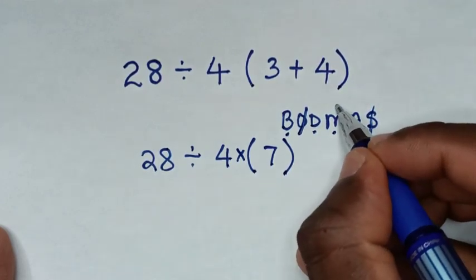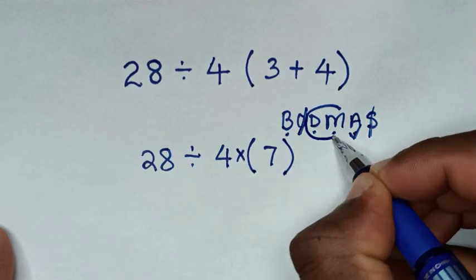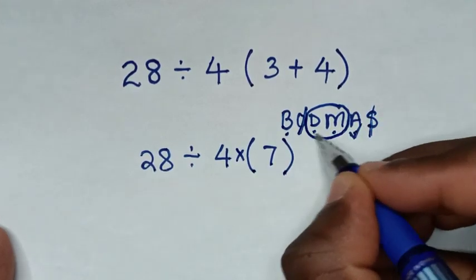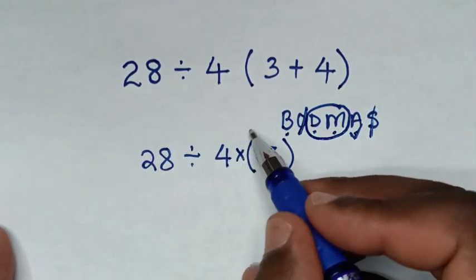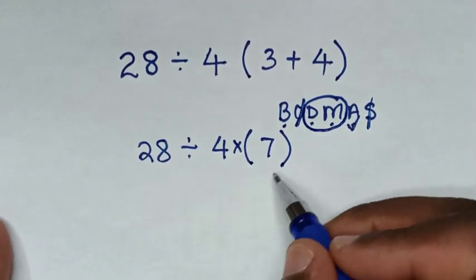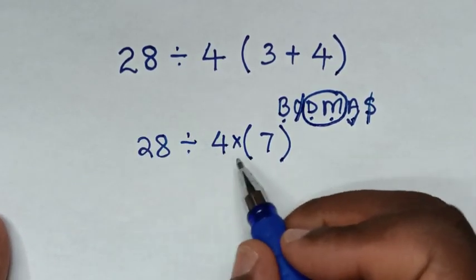So we deal with this group of division and multiplication according to which start first from left to right. Now from this our problem, we start with division then multiplication.